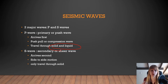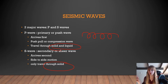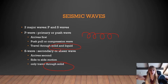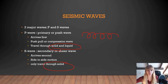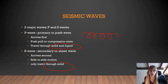The S wave stands for secondary or shear wave — it arrives second, moves side to side, and can only travel through a solid. If you take a rope and wiggle it side to side, you can see that motion. Some of you have probably done this in gym class with the battle ropes — that shear, side-to-side motion is what S waves produce.